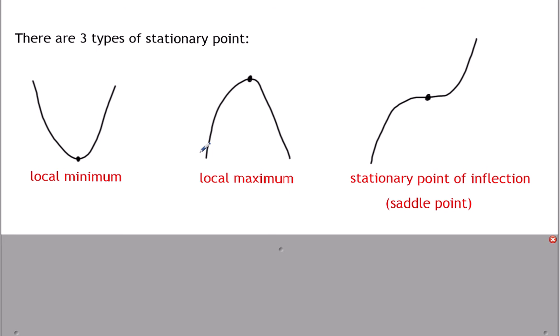There's something called a local maximum, which is the highest point in that particular region of the graph. And then we've got what's called — the proper name is a stationary point of inflection — where it goes flat, it doesn't come back down, it just continues to rise. Or you can have it the other way round where it comes down, flattens out and then keeps going down. We tend to call them a saddle point.